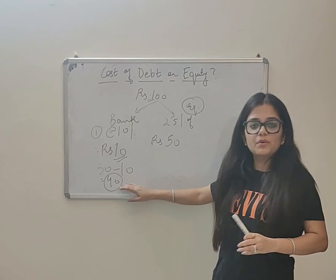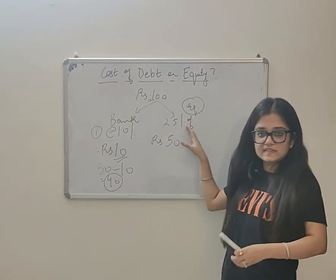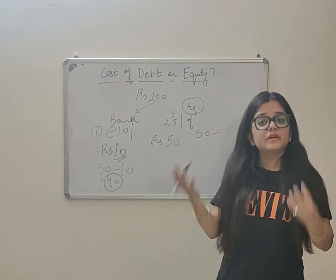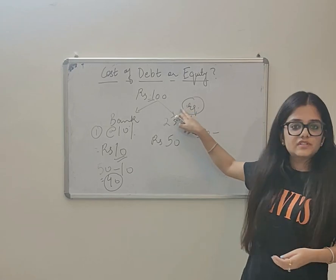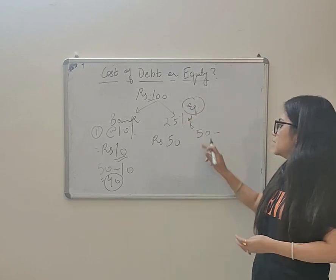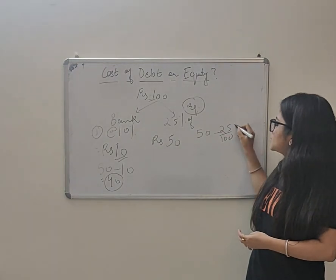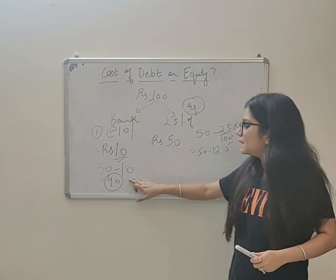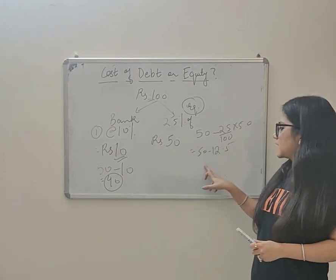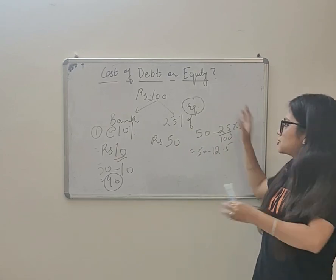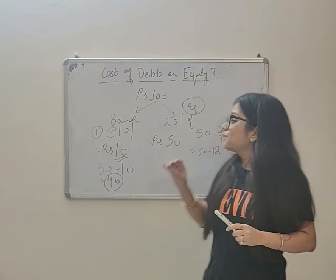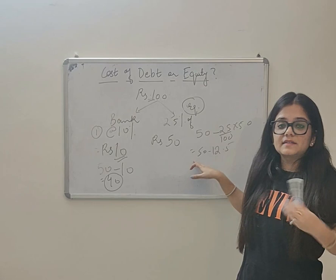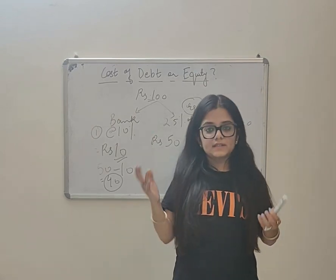Whereas in this second case, now 25 percent of profit will be given to the new shareholder. So 50 minus 25 percent of 50, which means 50 minus 12.5. But now this is clearly seen that equity shareholder ka raise karne se paise zyada mehenga pad rahe. But what other points? We will discuss this.